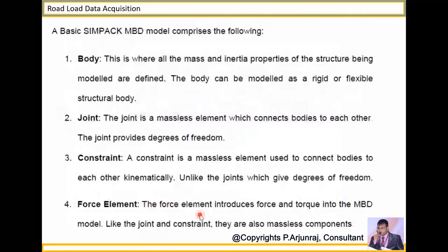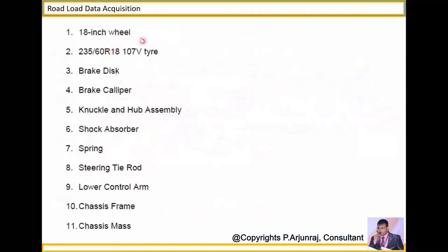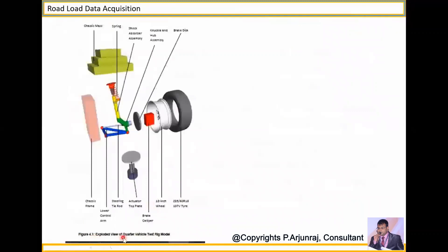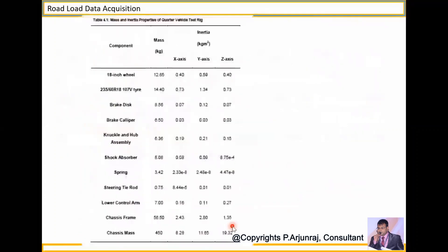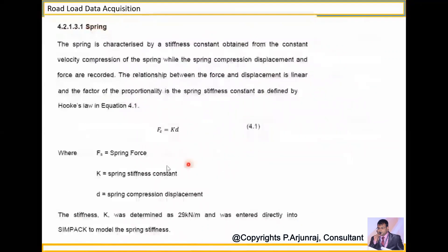You can also use multi-body dynamics in MATLAB and CA model development tools and software. The inputs needed include the wheel, tire, drag, brake caliper, and all associated components for measurement as part of testing. An explorer view of a quarter vehicle testing model shows all the components required. You need to understand the mass, inertia in the x, y, and j directions for all these components.